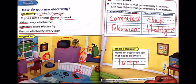Let's review: electricity is a kind of energy, it gives some things power to work. Wires carry electricity and batteries store electricity. We use electricity every day. And remember — be careful with electricity because it can be dangerous and you could get a shock.